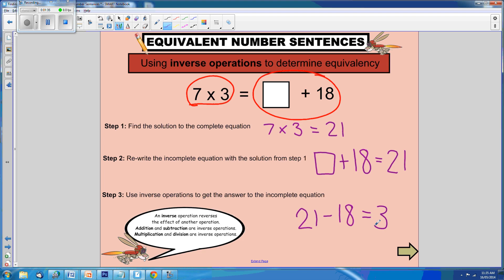Therefore, to create equivalent number sentences, we have found that 7 times 3 is equivalent to 3 plus 18.